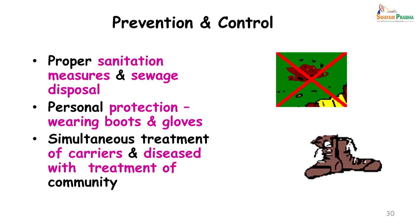For prevention and control of hookworm infestations, there should be proper sanitation measures and sewage should be properly disposed of. Personal protection is very important — those who work in soil should wear boots, and gardeners should wear gloves. Simultaneous treatment of carriers and the diseased will ensure treatment of the whole community. To summarize: hookworms Ankylostoma duodenale and Necator americanus have an indirect cycle, entering the host through skin penetration, reaching the lungs, going through the trachea into the intestine, where adult worms mature and cause blood loss leading to anemia.